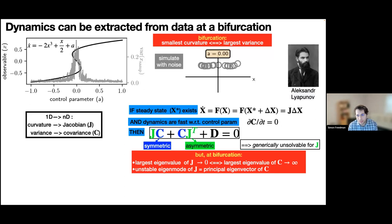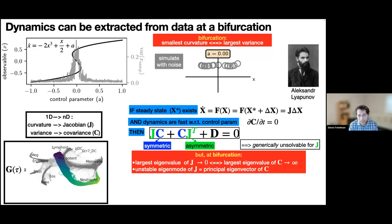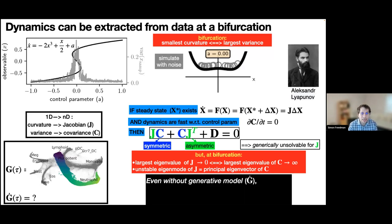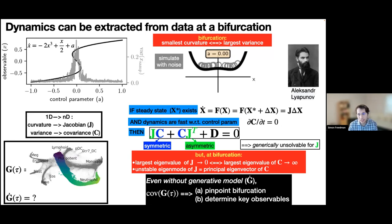What does this mean altogether? If we just have a trajectory of gene expression and don't know anything about the dynamics, we can still learn a lot from the covariance. We can pinpoint a bifurcation and determine key observables by examining the covariance as a function of some underlying control parameter.